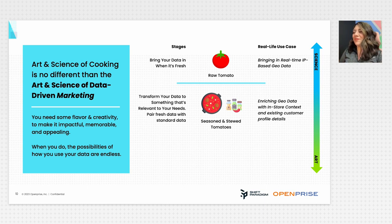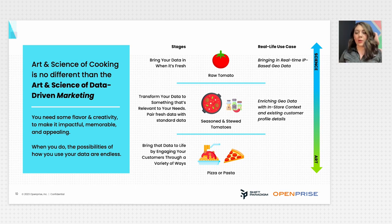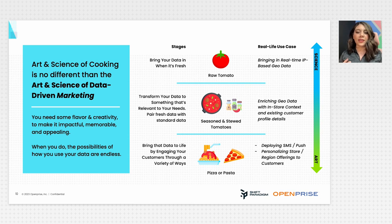For example, if you have IP-based or geo-based data, you can start enriching it with in-store context—promoting something happening within a store to somebody who is near that store. Use the customer data profiles you already have on that person and enrich with geo-based data. From there, bring that data to life by engaging customers in a variety of ways. You can deploy SMS and push based off customer profile data enriched with geo data, or personalize in-store and regional offerings. This shows the power of transforming standard data with real-time insights.